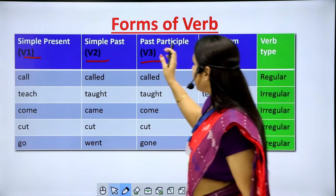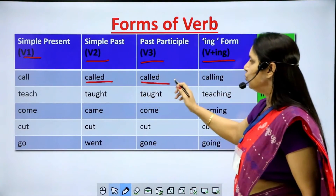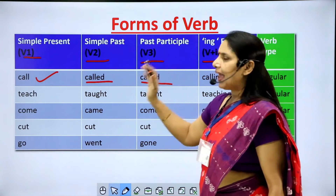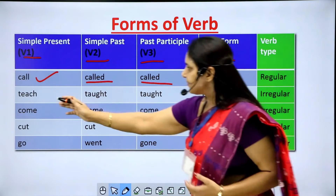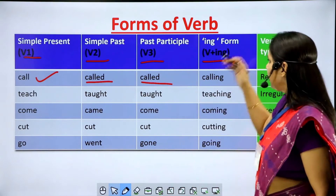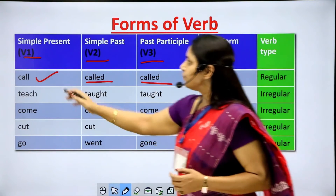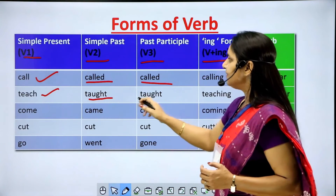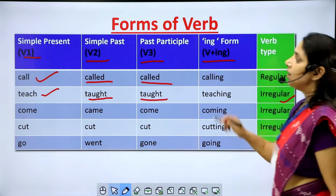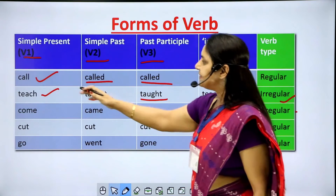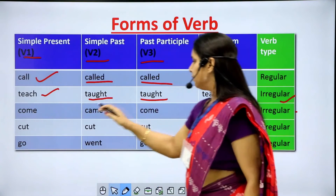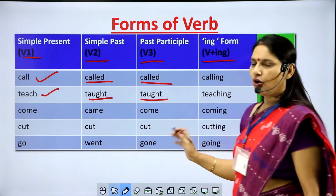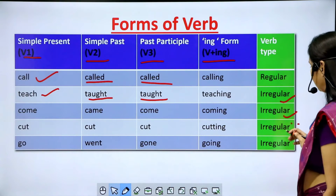Simple past and past participle forms of 'call' are made by adding 'ed' — these are called regular verbs, where V2 and V3 are formed by adding 'ed' to V1. Next is 'teach': V2 is 'taught', V3 is 'taught', and V+ing is 'teaching'. Since 'taught' is totally different from 'teach' and not made by adding 'ed', this is an irregular verb. Similarly, 'come', 'came', 'come' — irregular. 'Cut', 'cut', 'cut' — all three forms are same, also irregular.